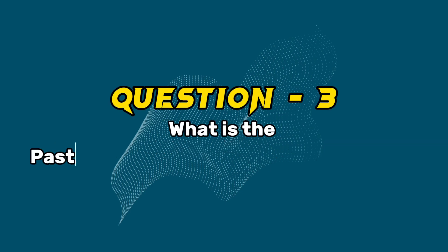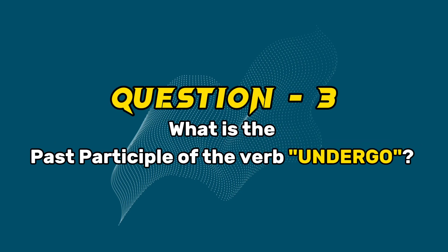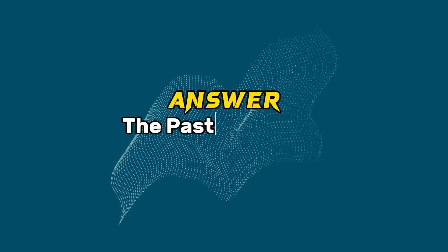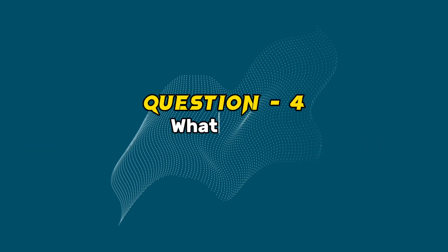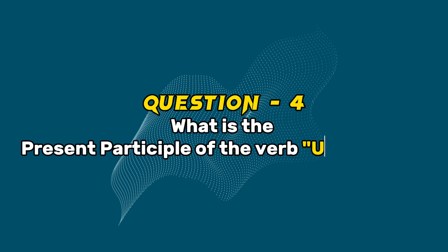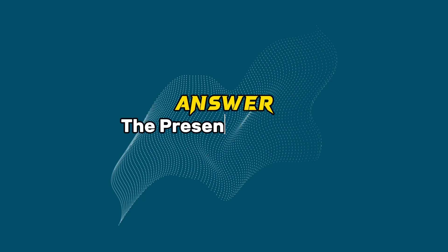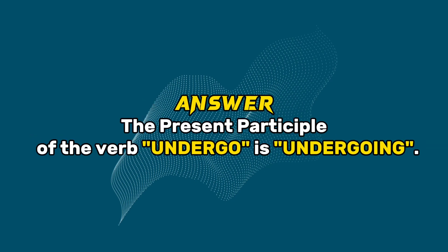Question 3: What is the past participle of the verb undergo? Answer: The past participle of the verb undergo is undergone. Question 4: What is the present participle of the verb undergo? Answer: The present participle of the verb undergo is undergoing.